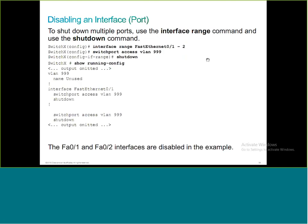The best way to secure unused ports is to shut them down. But apart from shutting them down, if a port accidentally gets enabled, by default switch ports work in DTP mode and can negotiate trunking or access. So you should also type 'switchport nonegotiate' to prevent negotiation. Additionally, assign unused ports to an unused VLAN — do not assign them to VLAN 1, which is the default native VLAN. Assign them to an unused VLAN like 999, then shut them down.